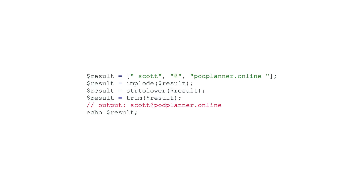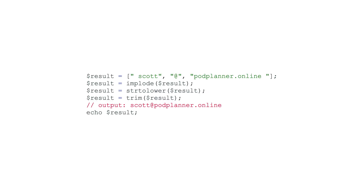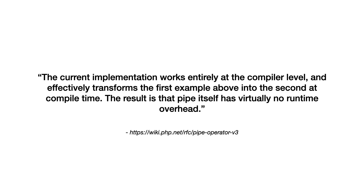In PHP code it's common to have a block of several functions that operate on the output of the previous function. PHP 8.5 is going to introduce a new operator called the pipe operator that allows chaining multiple callables, passing the return value of the left callable to the right callable — connected like a pipe. What I find most interesting is from the RFC: the current implementation works entirely at the compiler level, effectively transforming pipe operator code into the equivalent nested calls, meaning the pipe operator has virtually no runtime overhead. There are limitations — you can only use callables that accept one parameter and can't use callables that pass by reference.